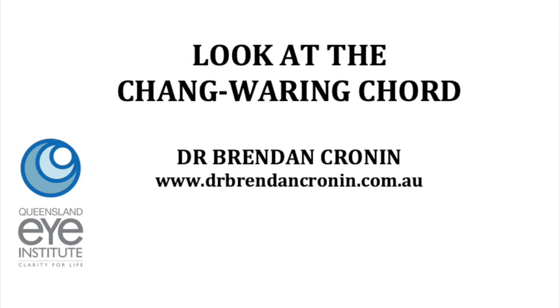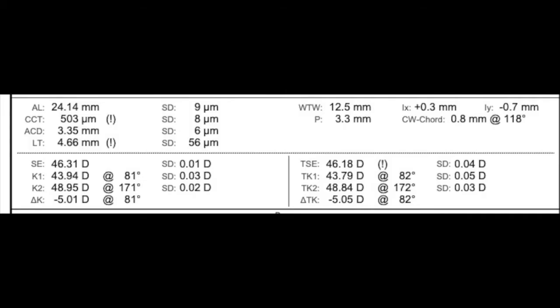The IOL Master 700 gives you the Chang-wearing cord, which is analogous to angle kappa — that's the angle between the visual axis, the line connecting the fixation point with the fovea, and the pupillary axis. This value is really important for determining which patients are bad candidates for a multifocal intraocular lens. Typically, most surgeons comfortable using multifocal lenses will say that you should avoid a multifocal lens in a patient with an angle kappa over 0.5.